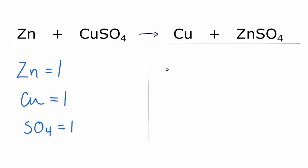On the product side zinc I have the one, copper I also have one, and then that SO4 group, that's sulfate, I have one of those. And everything's equal, this equation is balanced, you don't have to do anything else.